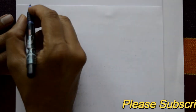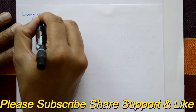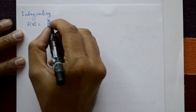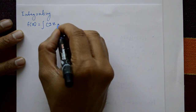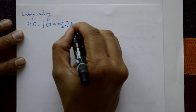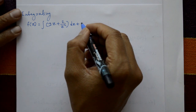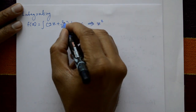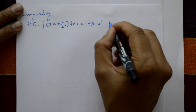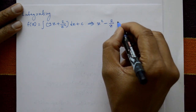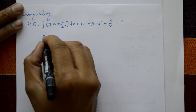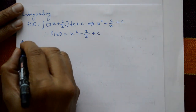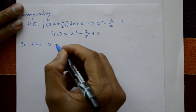Now integrate both sides. f(z) = ∫(2z + 2/z²) dz + c. After integration: the first term gives z², and 2/z² integrates to -2/z. Therefore f(z) = z² - 2/z + c.